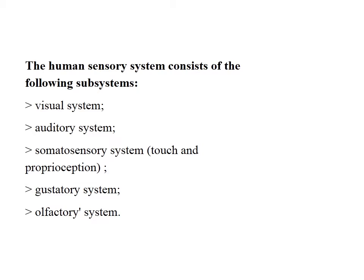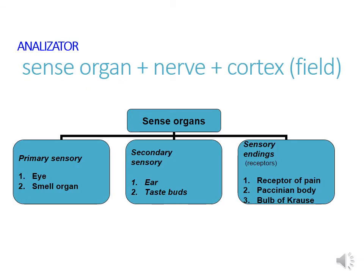Today we discuss the visual system. The sensory system consists of a peripheral part or sensory receptors, intermediate part, neural pathways, and a central part — parts of the brain involved in sensory perception. Receptors are subdivided into neurosensory receptors and sensoriepithelial receptors. By these principles we divide all sense organs into primary sensory, secondary sensory, and sensory endings.